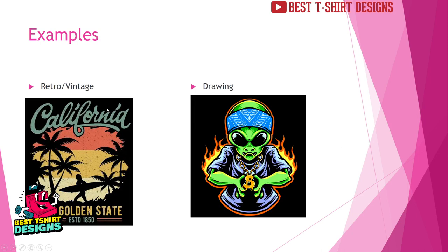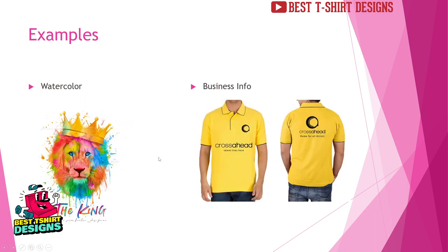This is an example of a retro vintage design — you can see some colorful designs that look kind of old because we use a grunge texture to make it look like an old or worn design. This is called a retro vintage design. And there are drawing style designs where you have to draw something — if you have an idea, you need to draw it to make it a graphic for printing on a t-shirt. This we can call a drawing t-shirt design.